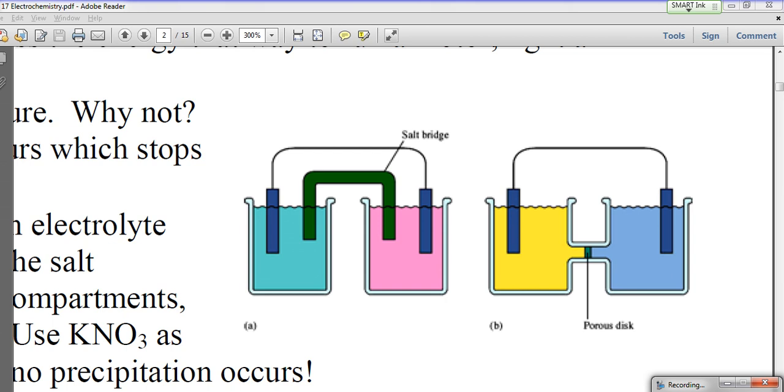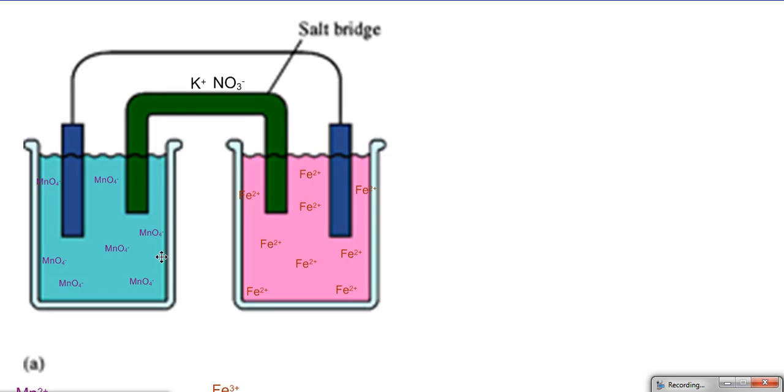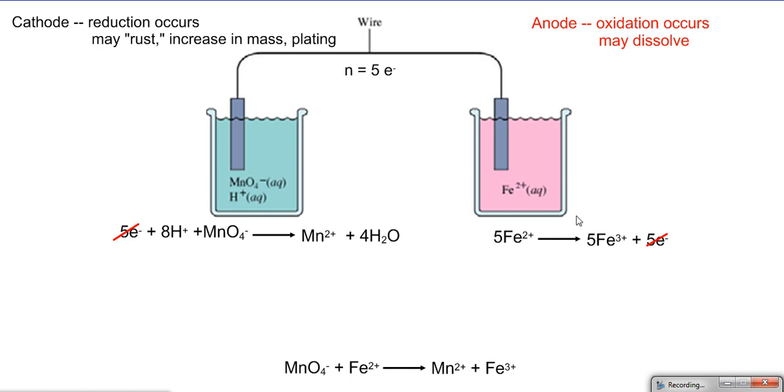So here we have the same diagram with our iron and our permanganate half cells separated with a salt bridge of potassium nitrate. The moment these two inert electrodes, because they have to be inert since we're dealing with two ions being formed, we have the formation of the ferric ion, formation of the manganese ion. So we had to pick an inert electrode, so we're going to say this is a graphite electrode.